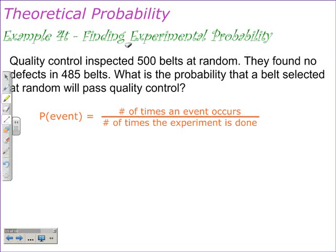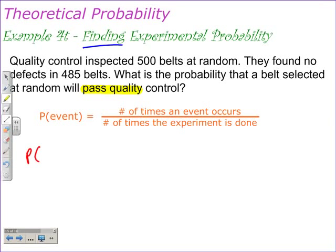Example 4, Finding Experimental Probability. The key thing here is that we are finding experimental probability. Quality control inspects 500 belts at random. They find no defects in 485 belts. What is the probability that a belt selected at random will pass quality control? We have that equation from the previous slide. The probability of the event is what we need to find, and we need to define the event. That event is defined right here — the probability that a belt passes quality control.